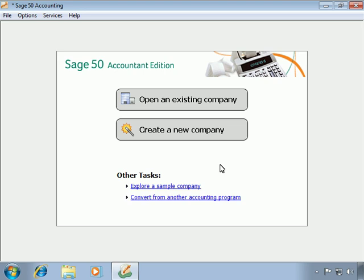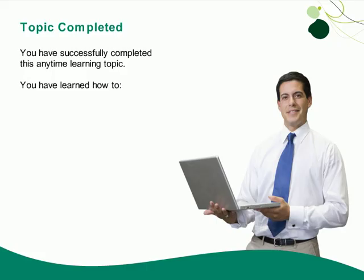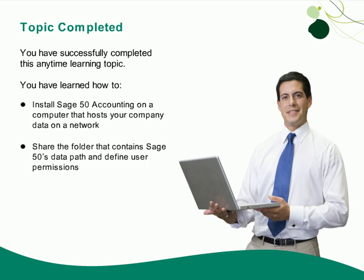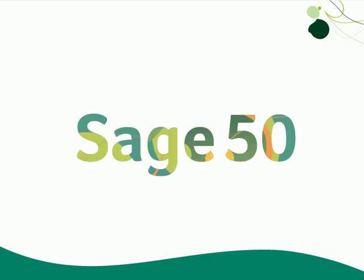With the server installation complete and the Sage 50 data path shared and available on the network, we can now install Sage 50 Accounting on each workstation that will be using the program. For more information, please view the Installing Sage 50 Accounting on a Workstation Anytime Learning Topic. As you have seen, installing Sage 50 is really a simple process. If you prepare your system properly and make sure that you register your product and download any available updates, you can have Sage 50 up and running in no time. You have successfully completed this Anytime Learning Topic. Thank you, and for information on additional training options, visit us at sageu.com.